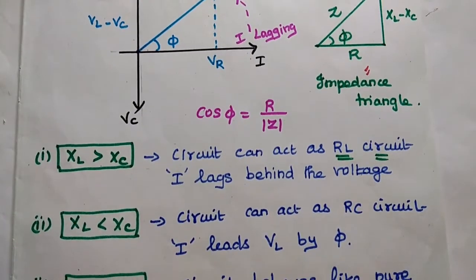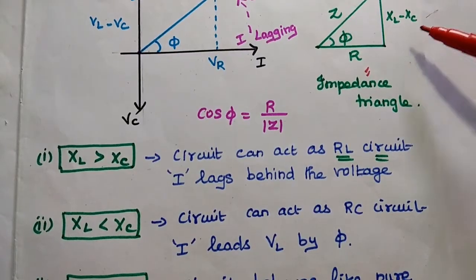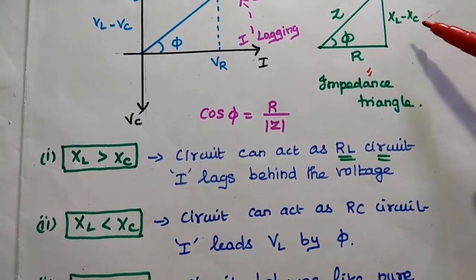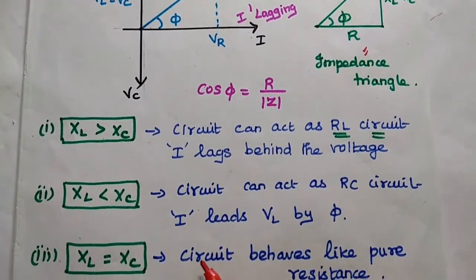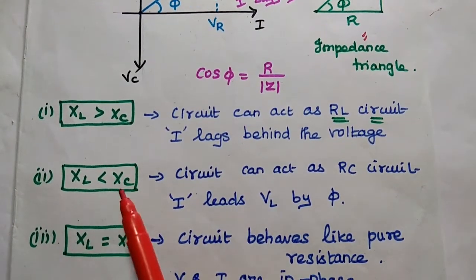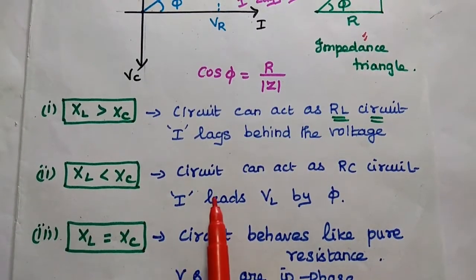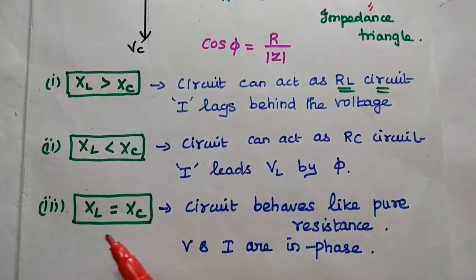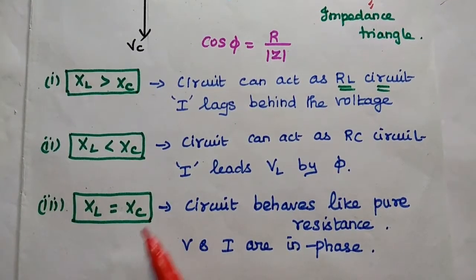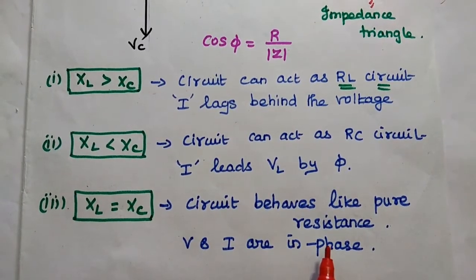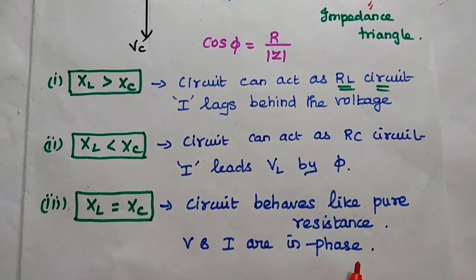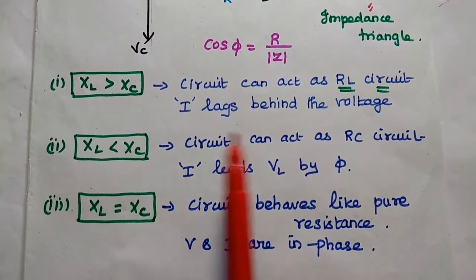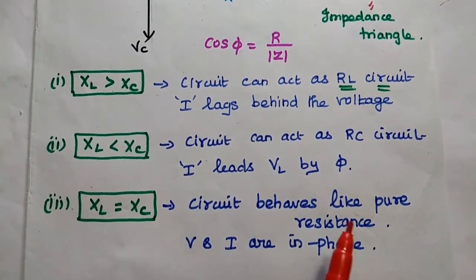Now we consider three conditions. If XL is greater than Xc, the circuit behaves like an RL circuit — we can ignore Xc. If the inductive reactance is less than Xc, it acts as an RC circuit, and the current leads VL by φ, which is the phase angle of this RLC circuit. If both are equal, that is XL = Xc, they cancel each other and the circuit behaves like a pure resistance circuit where current and voltage are both in phase.